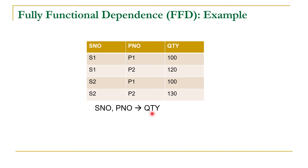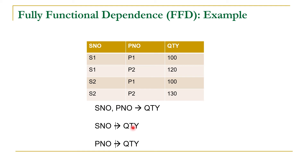Now let us give thought about its fully functional dependence. Does S number and P number fully functionally determine quantity? In order to check for fully functional dependence, we have to create subsets of X. Here S number is considered as X1, while P number is considered as X2, and quantity is our Y. Y is functionally dependent on X, which we have already proved. Now Y should not be functionally dependent on any subset of X — so we have two subsets: S number and P number.